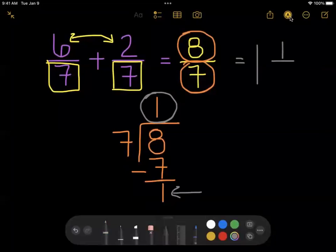Now the denominator would stay the same. It would stay as seven. You could either get it from your original fraction or you could get it from the outside of your division. So eight sevenths, when turned into a mixed number, becomes one and one seventh.